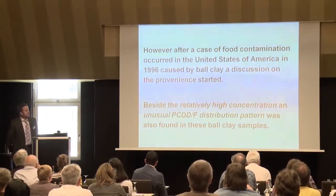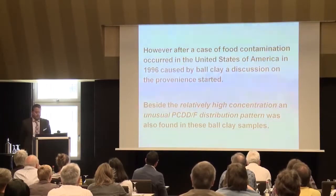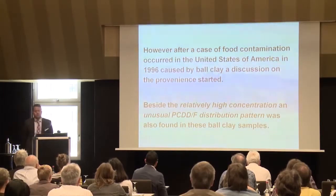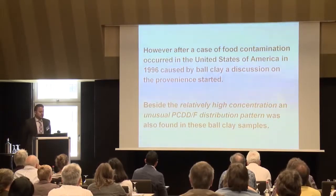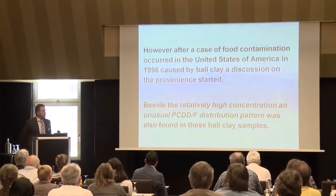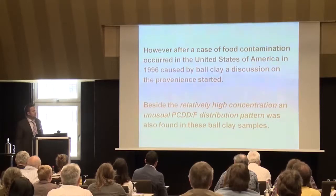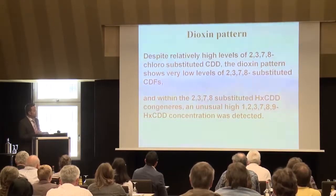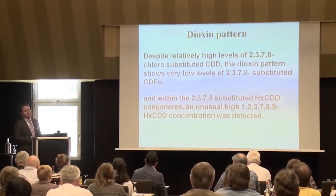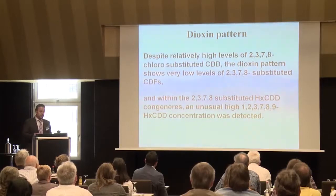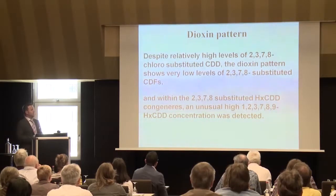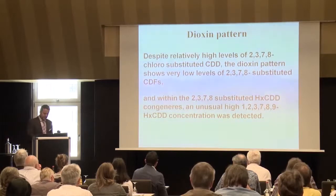This changed a little bit in 1996, when food contamination occurred in the United States, caused by heavily contaminated ball clay. These samples were particularly notable because, beside the high concentration, a quite strange dioxin-furan pattern was found. Nearly no furans were present, while there were very high levels of dioxins — especially an unusually high level of 1,2,3,7,8,9-hexadioxin within the hexadioxins.